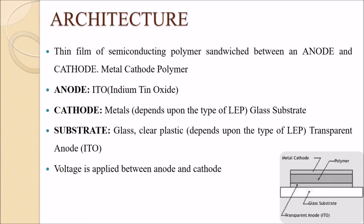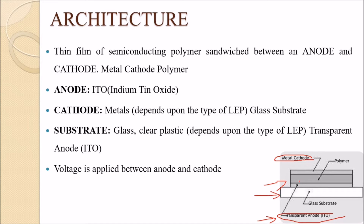The architecture of an LEP consists of a thin film of semiconducting polymer sandwiched between a cathode and an anode — also called a metal cathode polymer structure. The anode is ITO, indium tin oxide, which is transparent. The cathode is metal, and the substrate is glass or clear plastic, depending on the type of LEP. Voltage is applied between the anode and cathode.